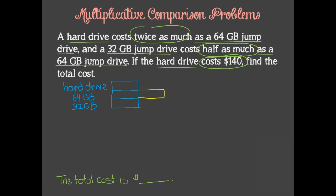Now, looking at the problem again, we are told that a hard drive costs twice as much as a 64GB jump drive. That means the hard drive unit bar should be twice as long as the 64GB drive's bar, so we can add three more equal sized units onto it. We are also told that the hard drive costs $140, so we should indicate that at the end of the unit bar. To complete our model, we are asked to find the total cost for all the drives, so we can bracket the model and place our question mark here.